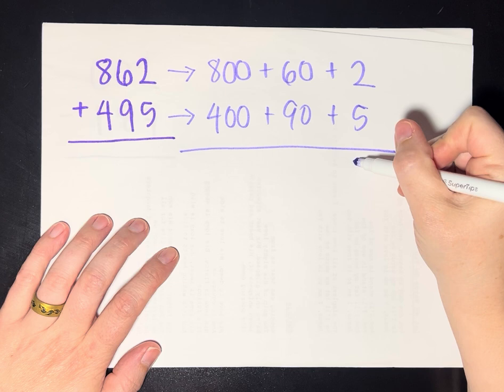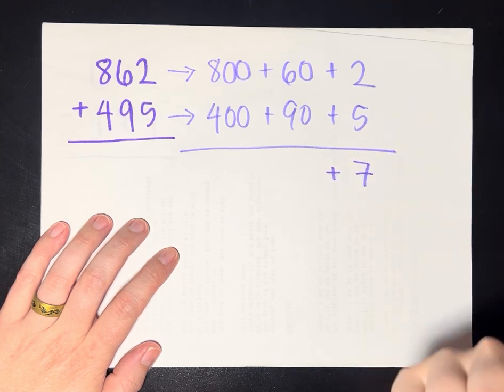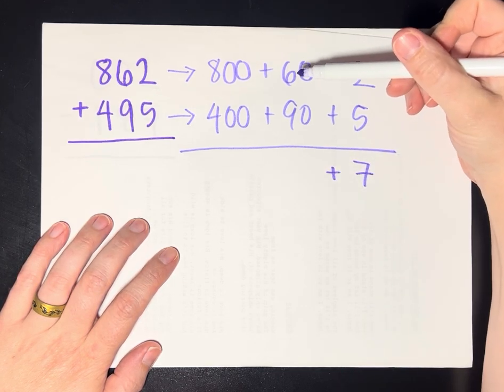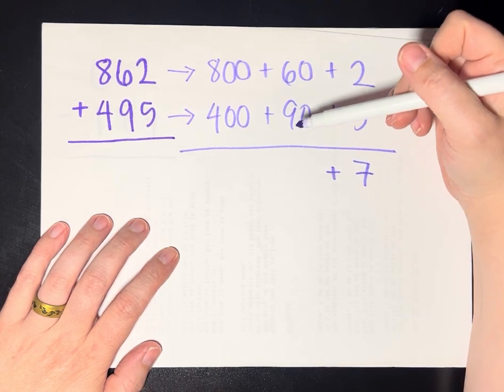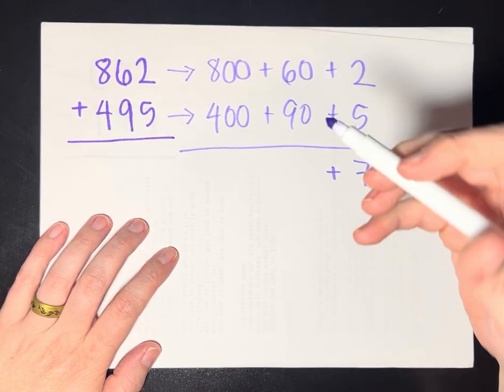And so I know 2 plus 5 is 7, and so I'll write that down. And now I know that 60 plus 90, that's not too bad if I know what 6 plus 9 is, that's 15, so that's 150.